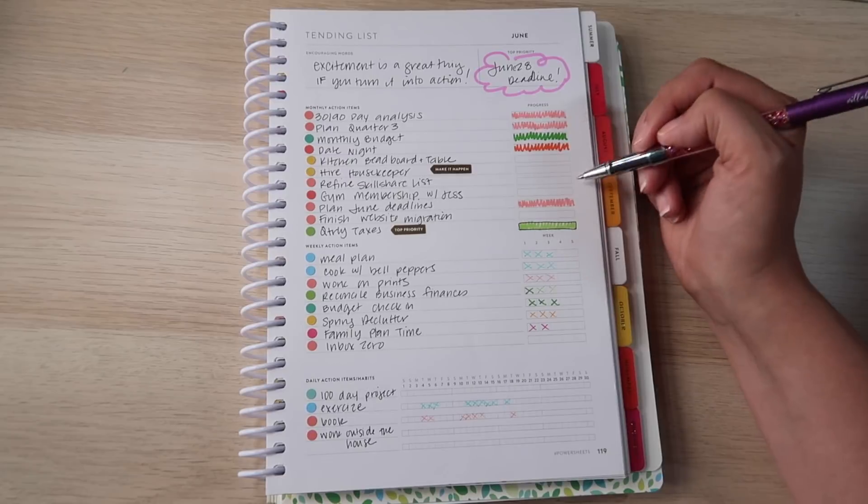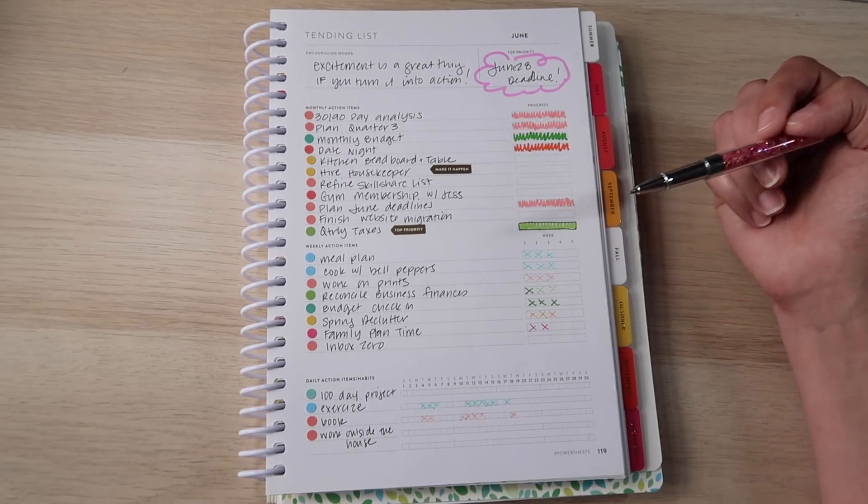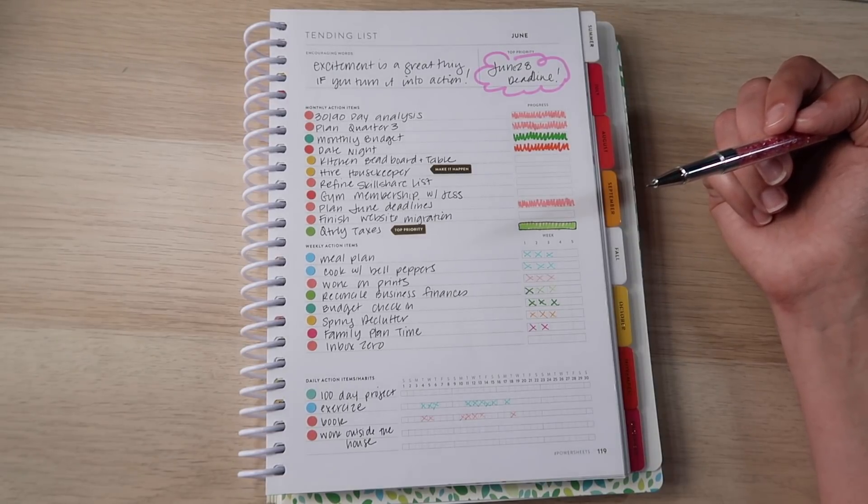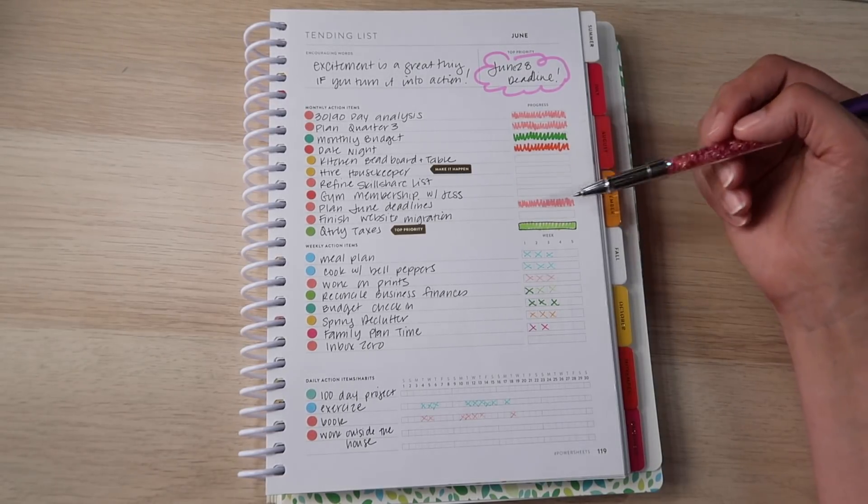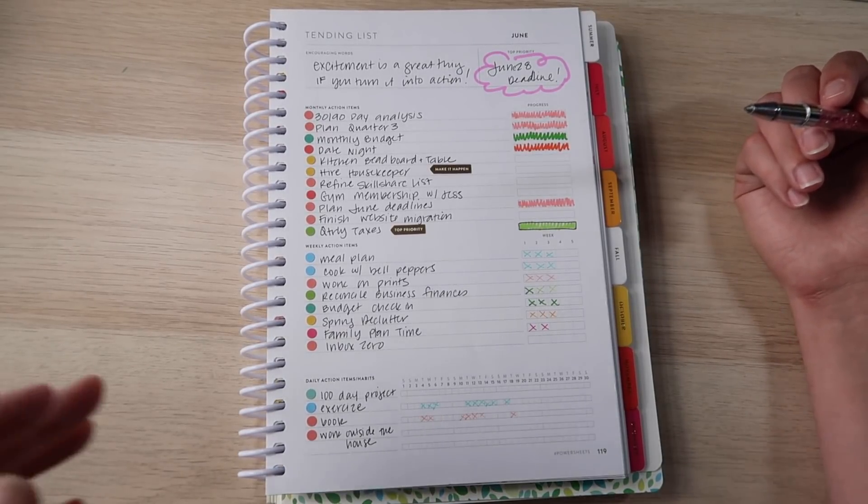Now we're into the section of looking at the other things I still finished. I planned out my June deadlines and my quarterly taxes got filed for the first time ever. I'm so proud of myself. Now looking at the monthly tasks that aren't done yet, which ones do I think are actually going to get done and which ones do I think are going to get punted?